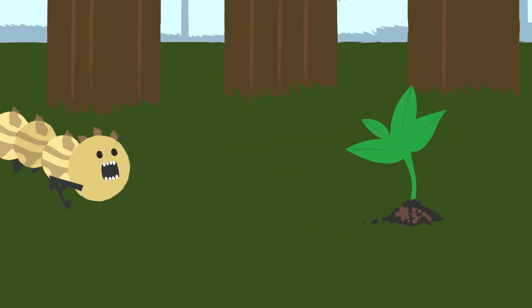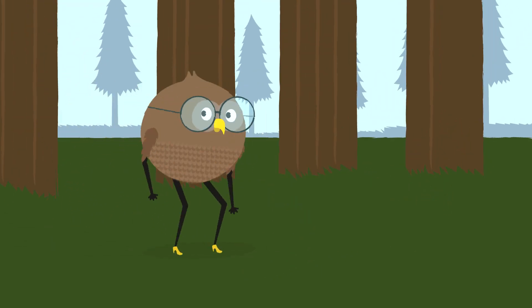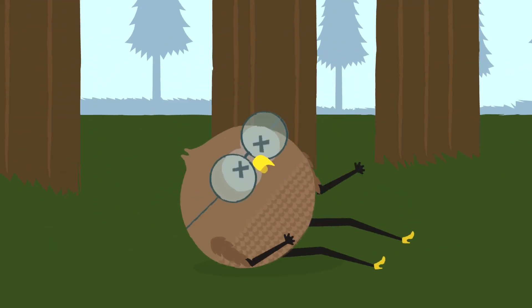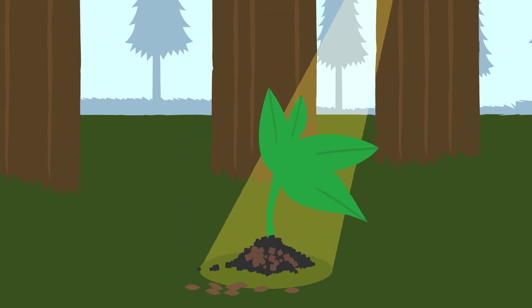One species' waste is another's food, energy is provided by the sun, things grow, then die, and nutrients return to the soil safely. And it works.